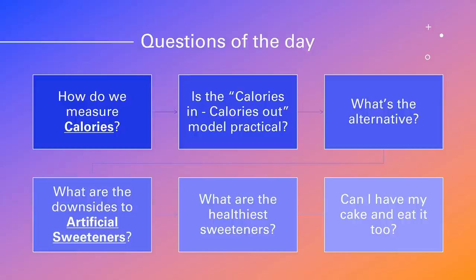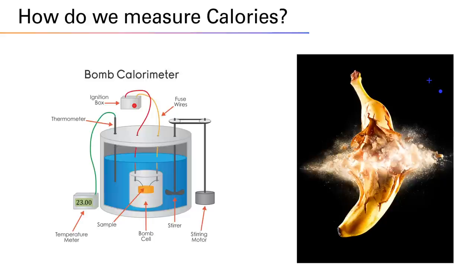Let's start with how we measure calories. A calorie is defined as the amount of energy it takes to heat up one gram of water by one degree Celsius. That definition comes from how we actually measure calories — using a device called a bomb calorimeter. Basically, you take a food item, place it in the bomb cell, and explode the food. Heat is released from the explosion and heats up the surrounding water. Depending on how much the water heats up, that informs the number of calories in the food — so something with 400 calories heats the water twice as much as something with 200 calories.